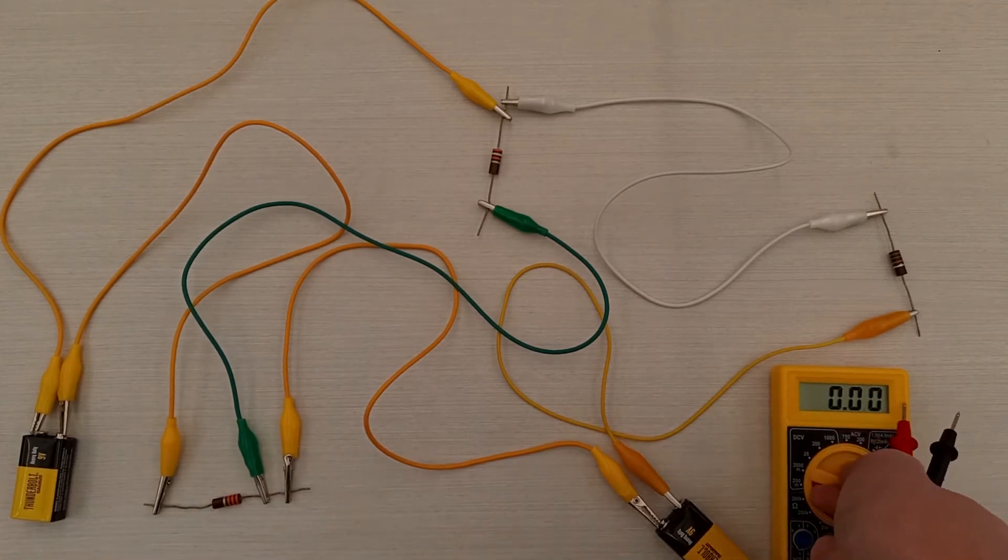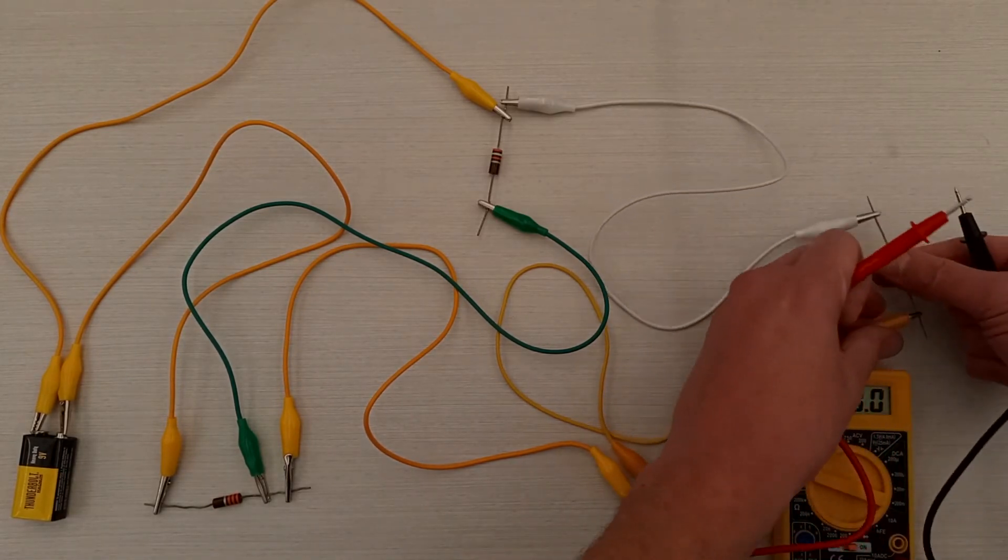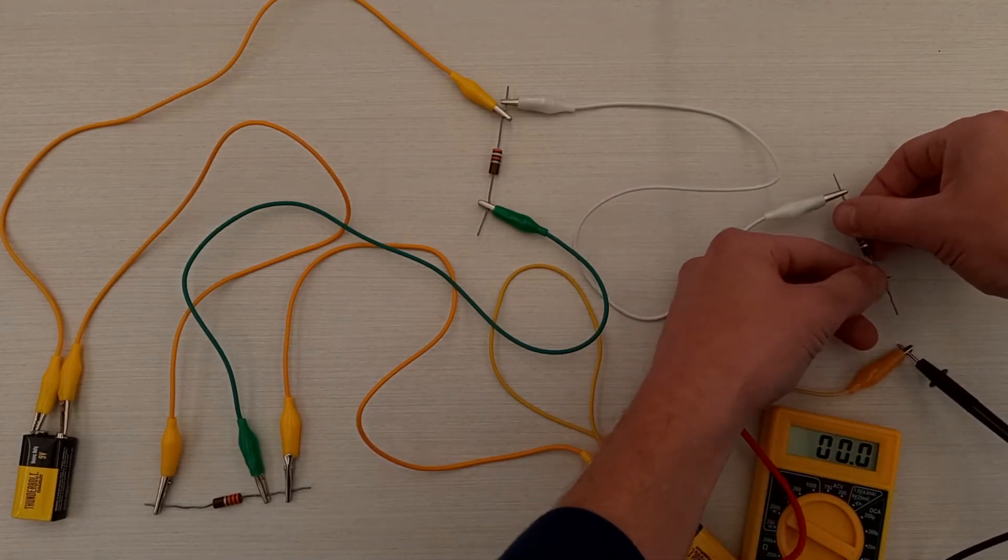Remember that when measuring current, all of the current has to pass through the multimeter, which means you have to disconnect the circuit at the point where you want to measure current and insert the probes of the multimeter on either side of the break.